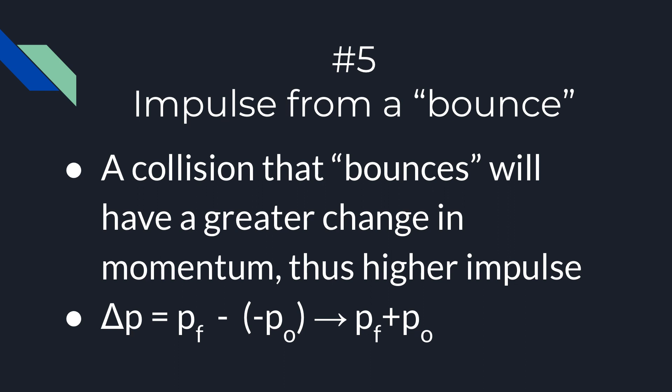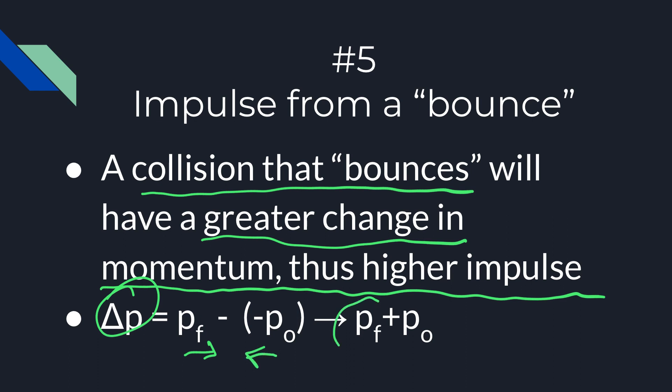So the last question type is really kind of a concept. And it's that you understand when something bounces, when you have a collision where something bounces, that's going to have a greater change of momentum compared to other situations. And when you actually calculate it, you have one going to the right, and when it bounces, it rebounds to the left. And so that's going to have a bigger change. In fact, you're essentially adding those two momentums up.